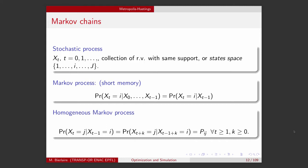A stochastic process will be called a Markov process when the probability of a state given the whole history of the process is equal to the probability of the state given the previous state at T-1. So the next state can be predicted from the current state and we can forget about the whole history.